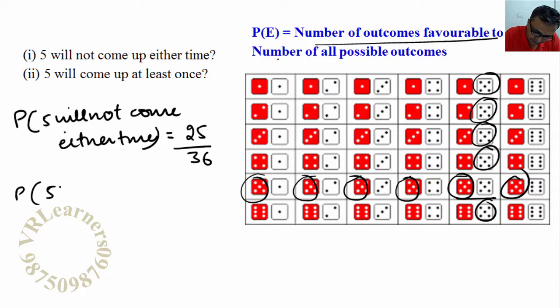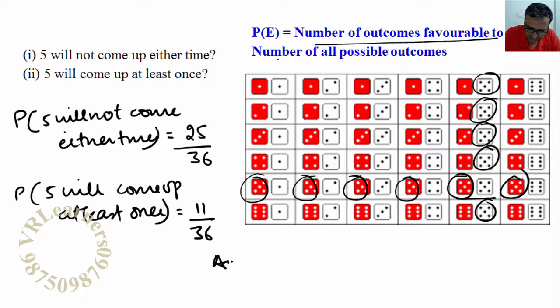And if I calculate the probability that 5 will come up at least once, what will it be? 11 by 36. This is our answer.